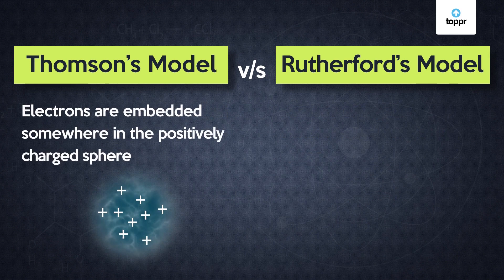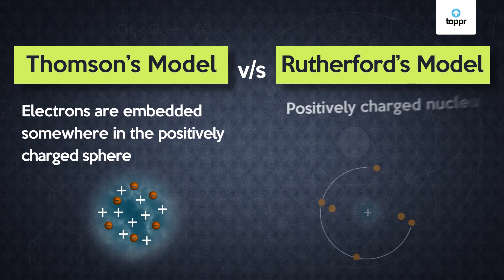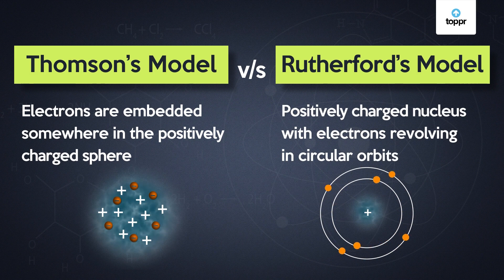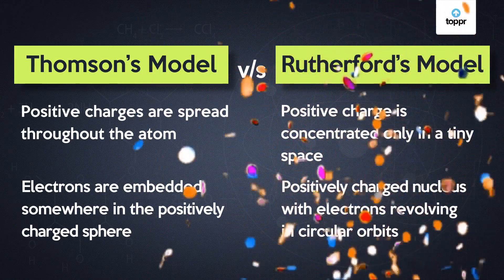Moreover, Thomson said that electrons are embedded somewhere in the positively charged sphere, but he was not sure of any specific region in the atom. On the other hand, Rutherford predicted that an atom consists of a positively charged nucleus with electrons revolving around it in circular orbits. This surely gave a more concrete idea about what an atom looks like. So, clearly, Rutherford's atomic model is the winner here.